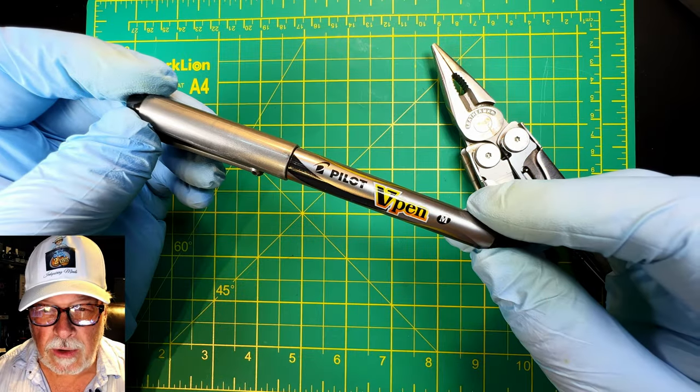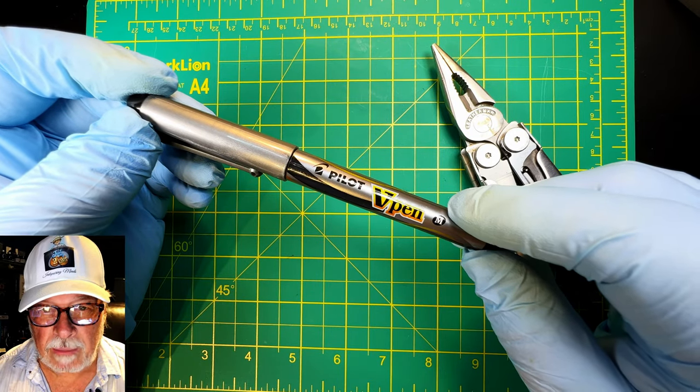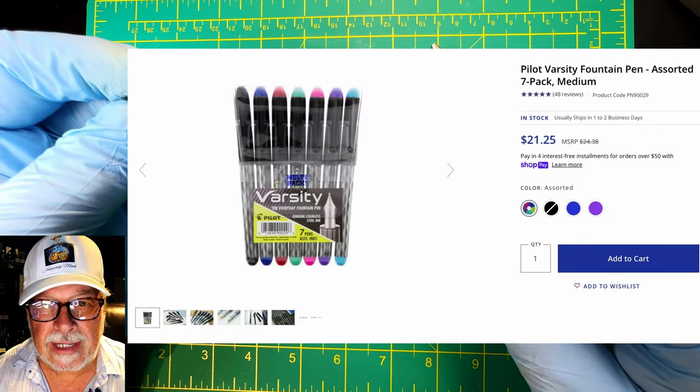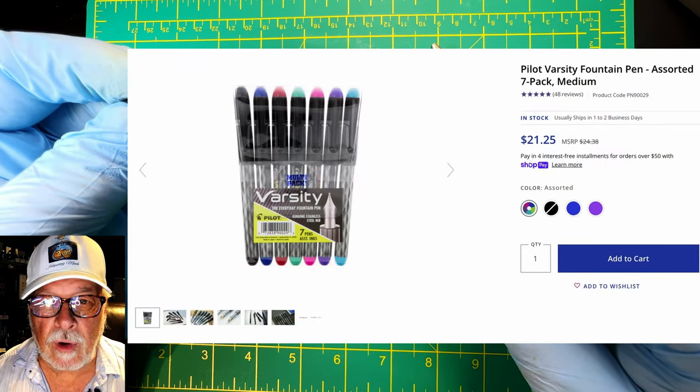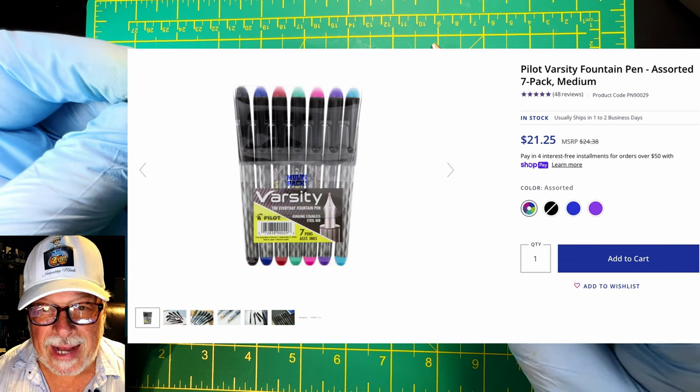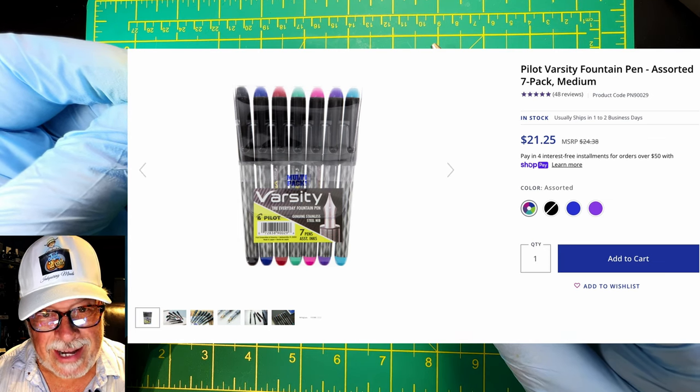The Pilot Varsity or the V-Pen here is one of the most inexpensive fountain pens on the market. You can get a pack of seven Varsity pens in seven different colors for only $21.25, that's only three bucks a pen. And as the package says, the nibs are genuine steel, so don't be fooled by imitations.